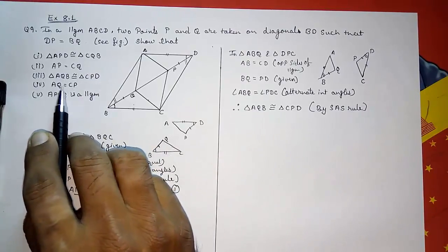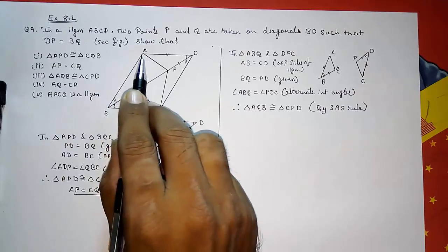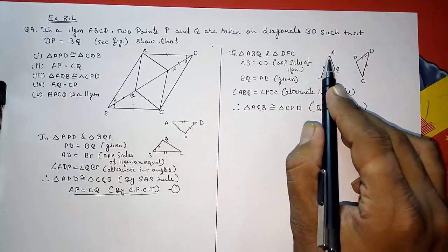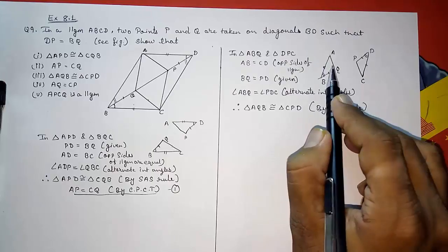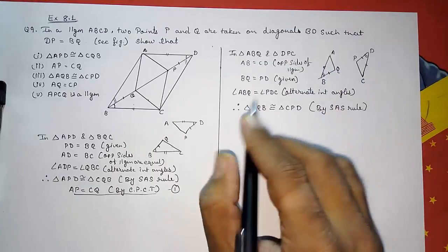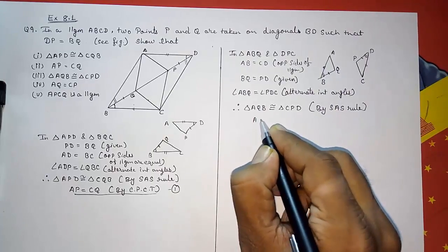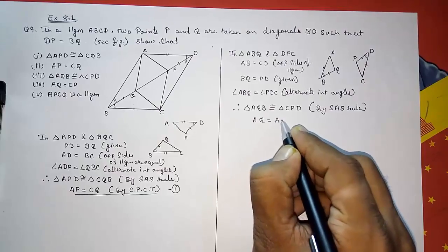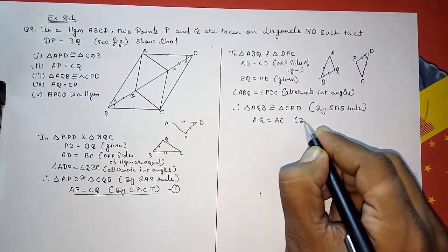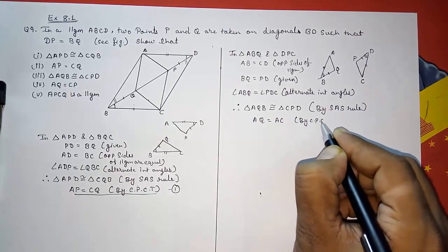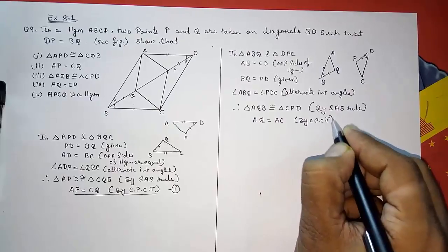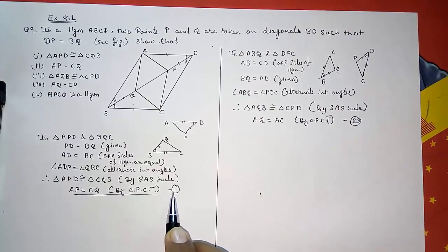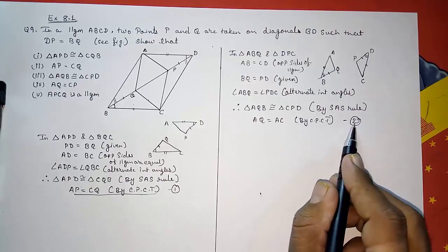Now for the fourth part: AQ is equal to CP. Yes, we can say AQ is equal to CP by CPCT — this is Result Number 2. Take Result Number 1 (AP = CQ) and Result Number 2 (AQ = CP) for the next part.